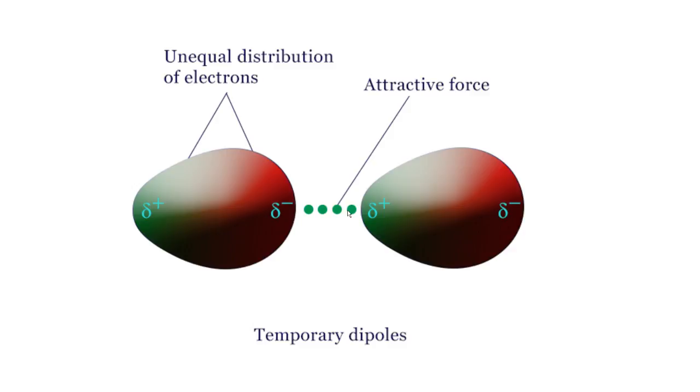This end will induce a temporary dipole as you can see here on another molecule and this end of this molecule will get a partial positive charge and this will push electrons on this end and this will get a partial negative charge. So temporary dipoles are induced and this attractive force is the intermolecular force.